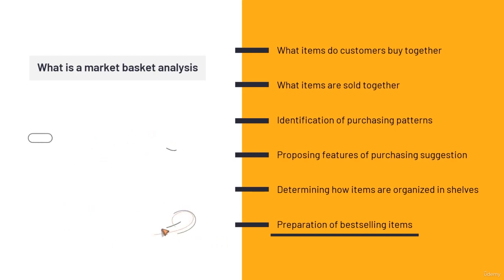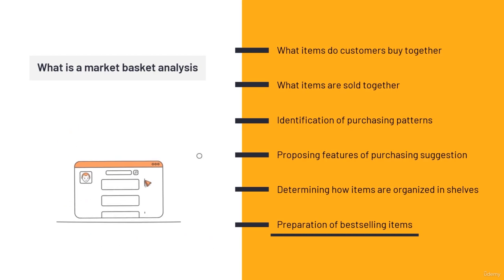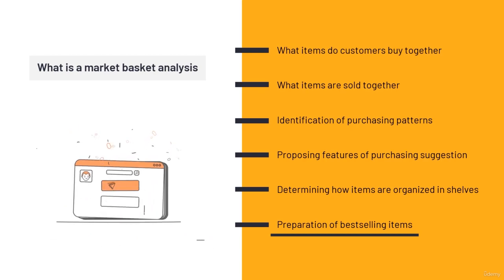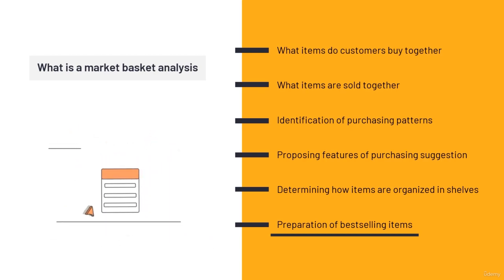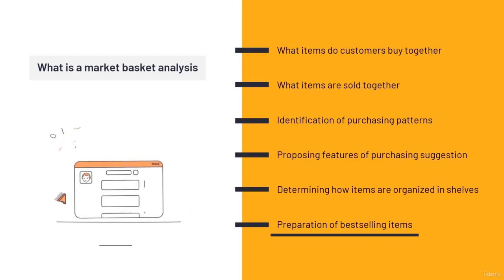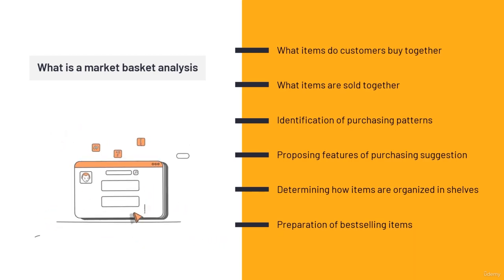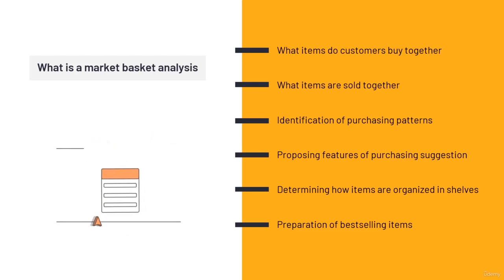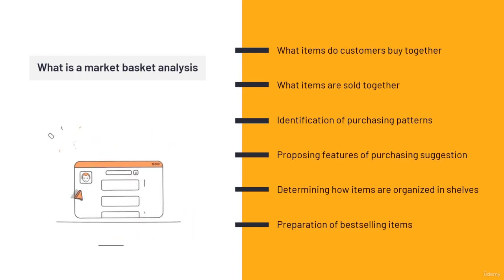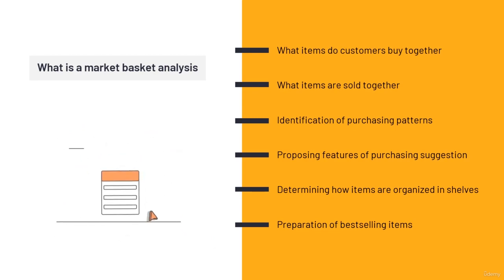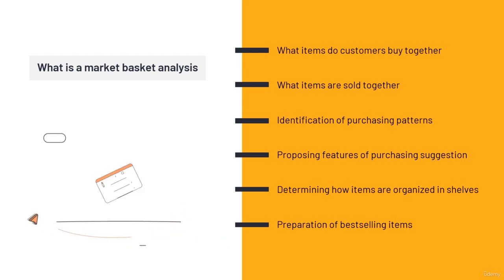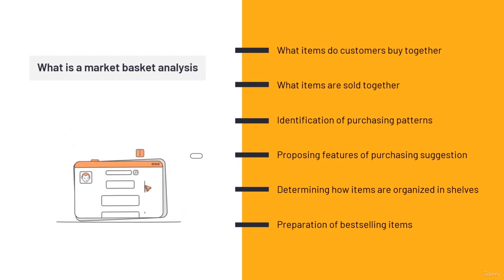We had a similar project once. We ran the algorithm and got the output. It told us that these items are being sold together, and it also gave us a hint on one item and said it's not selling very well. The client found it interesting — he said he used to think this item was so popular. As I mentioned, the output of data mining must be something awesome and interesting. Data mining can sometimes give us outputs we didn't expect.